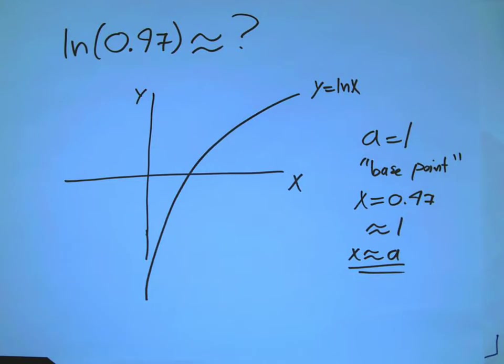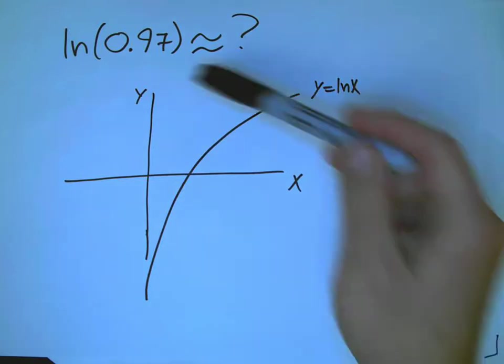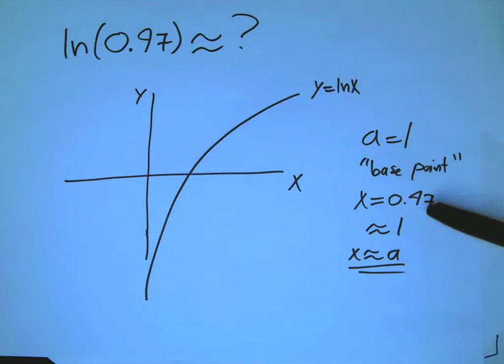Sometimes they actually tell you, here's the value, use a equals 1 or whatever. But if they don't give it to you, you want to look at, given my complicated number, x, 0.97, what's a simple number near that?